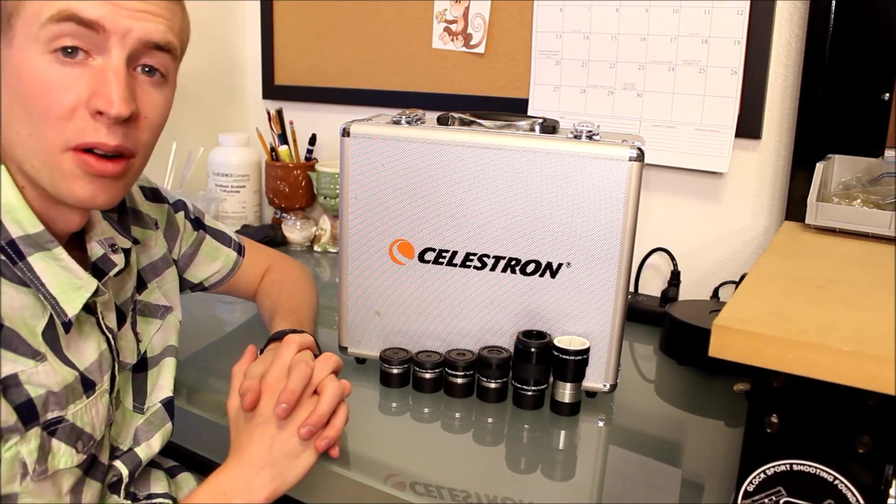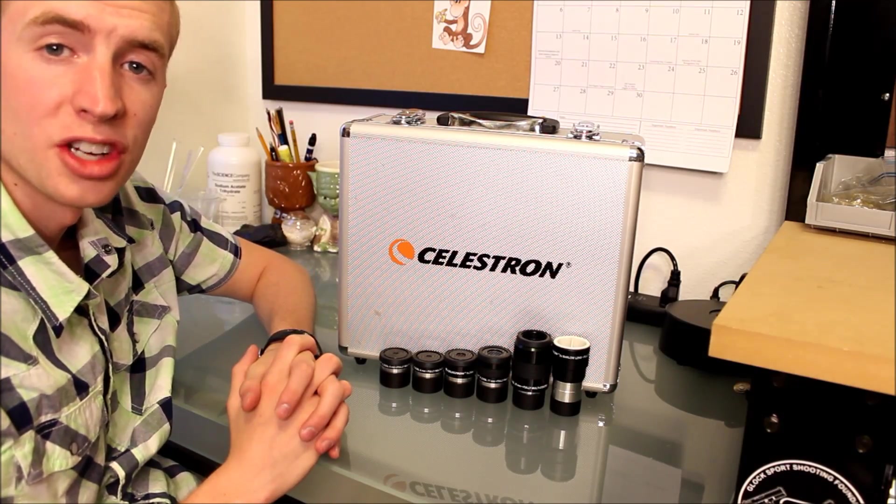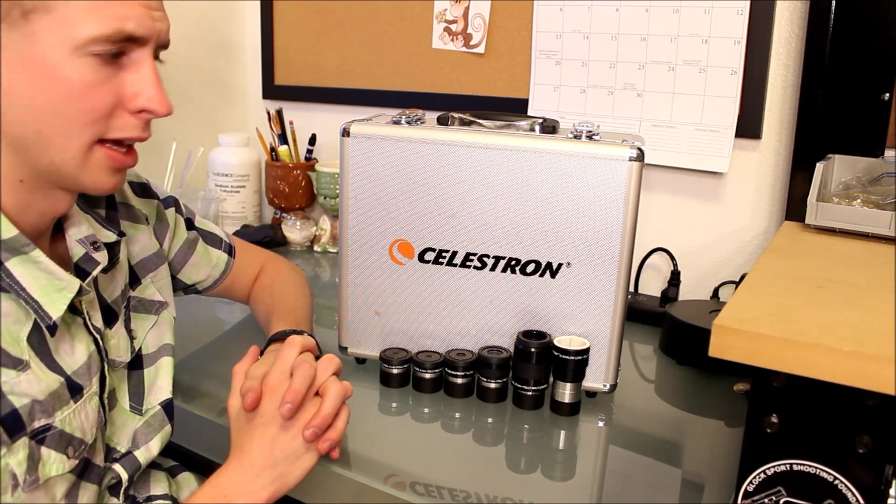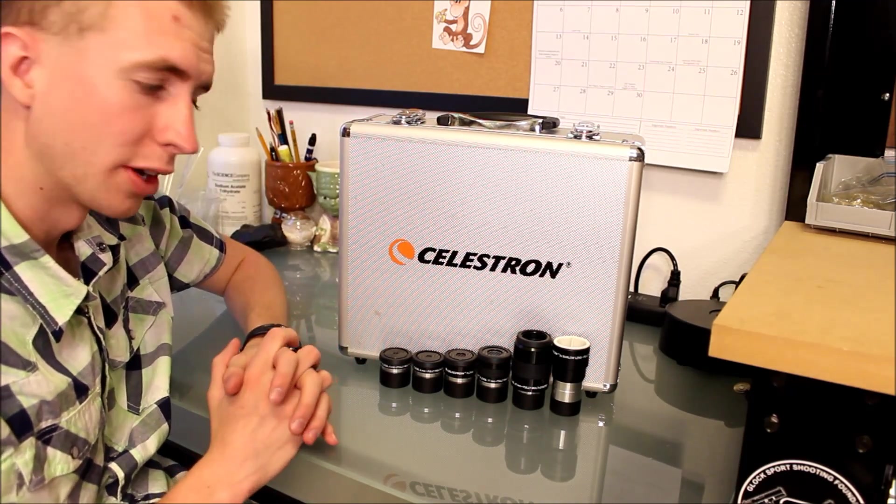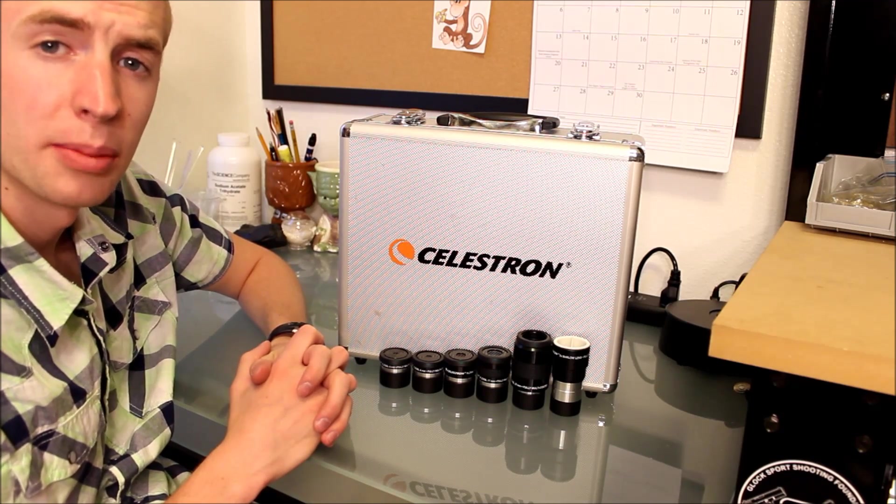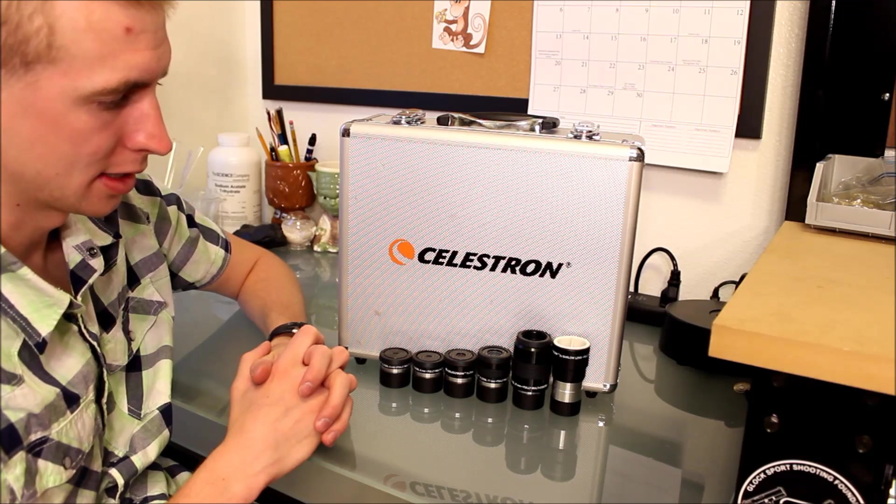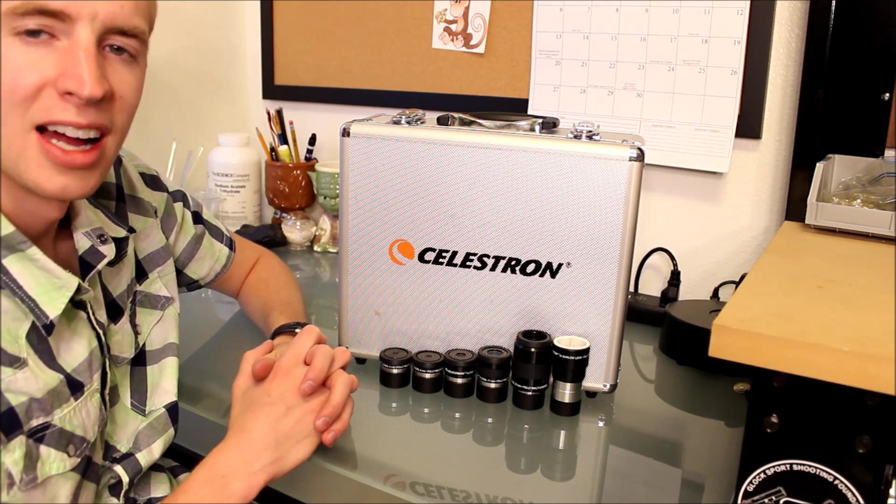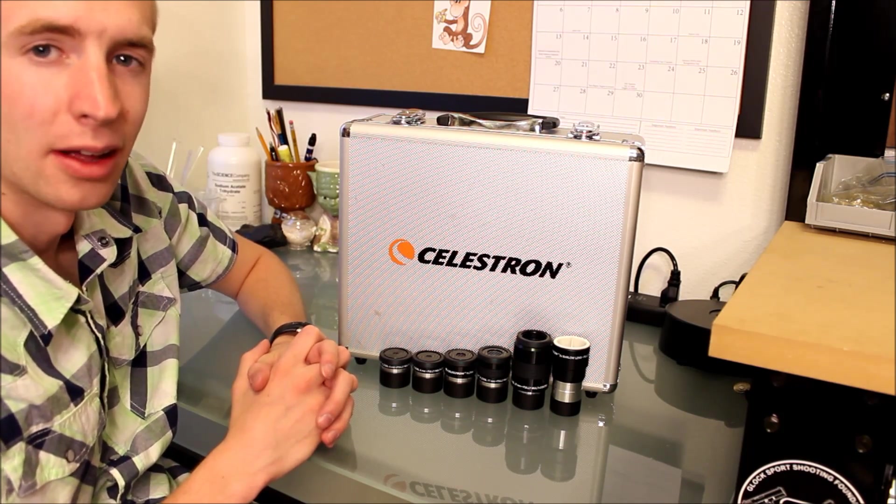All right, well that's my review of the Celestron 1.25 inch eyepiece kit. It's a pretty solid kit. The case is especially solid. It's lasted four years without too many dings or scratches. I really like the 17 millimeter and the 32 millimeter eyepieces, as well as the 2X Barlow. I just think that your money could be better spent elsewhere.